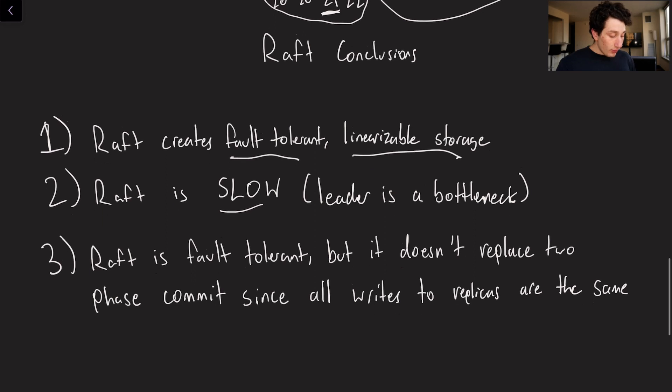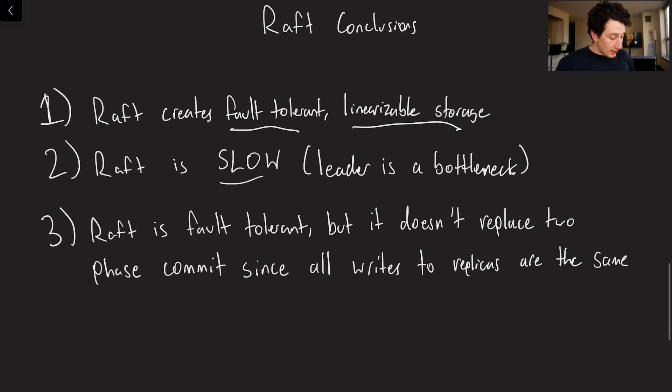And then finally, even though Raft is fault tolerant, it does not replace two-phase commit. So recall that two-phase commit is one where instead of needing the majority of nodes to say yes, we need every single node to say yes. And so if a node says no, things are not going to go through, this write is not going to happen.